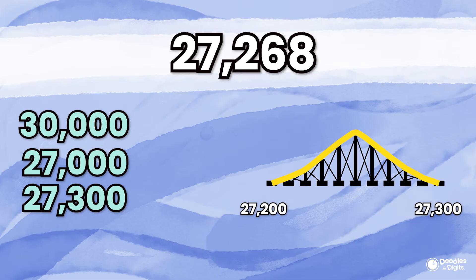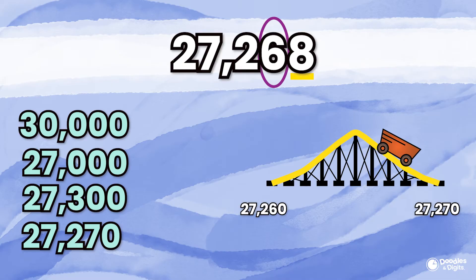Now let's do the tens place. There's currently a 6 in the tens place, but we're going to look at the place value to the right, which is an 8. Since 8 is five and up, are we going to round up or down? That's right — we're going to round up to 27,270.